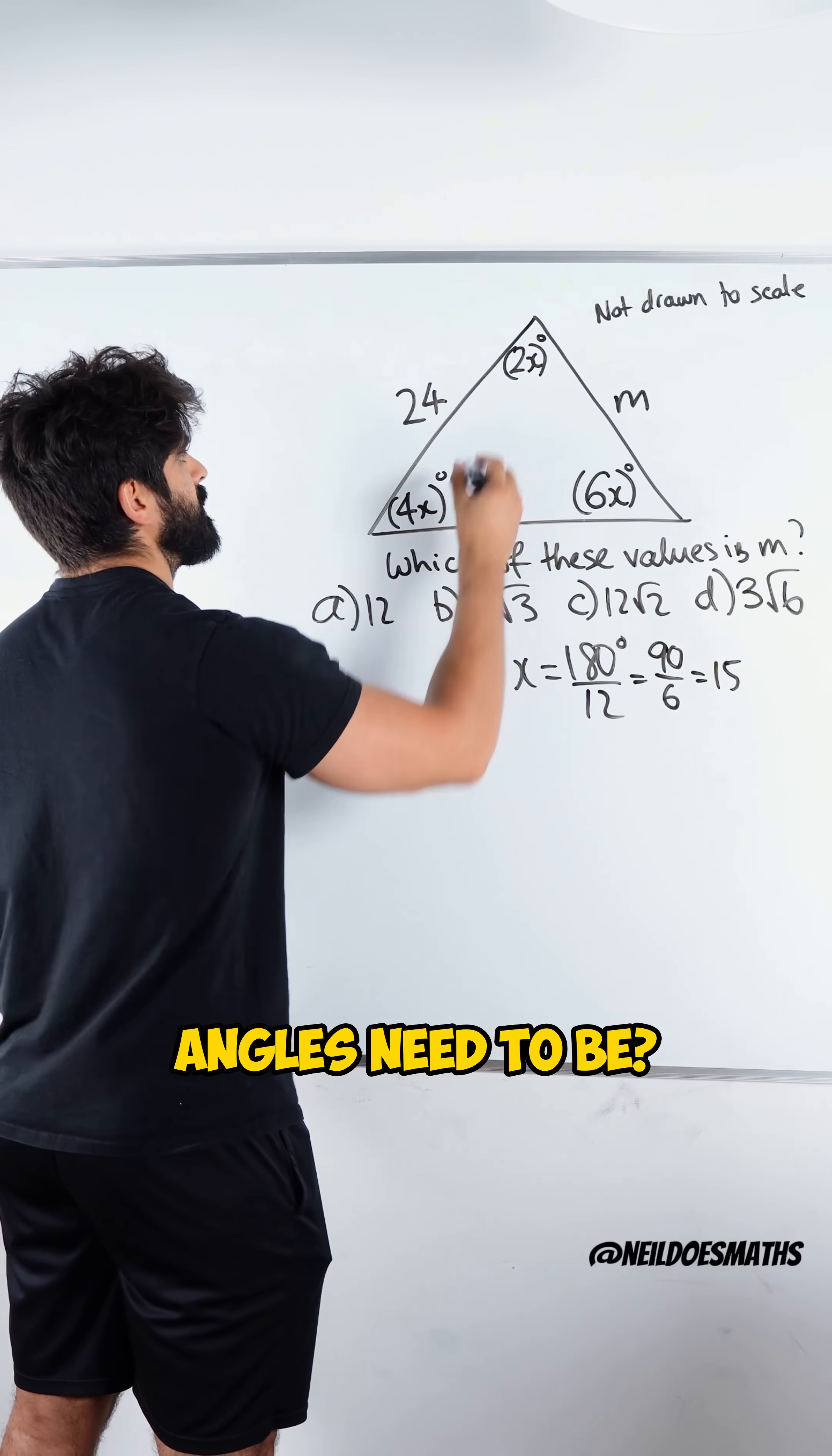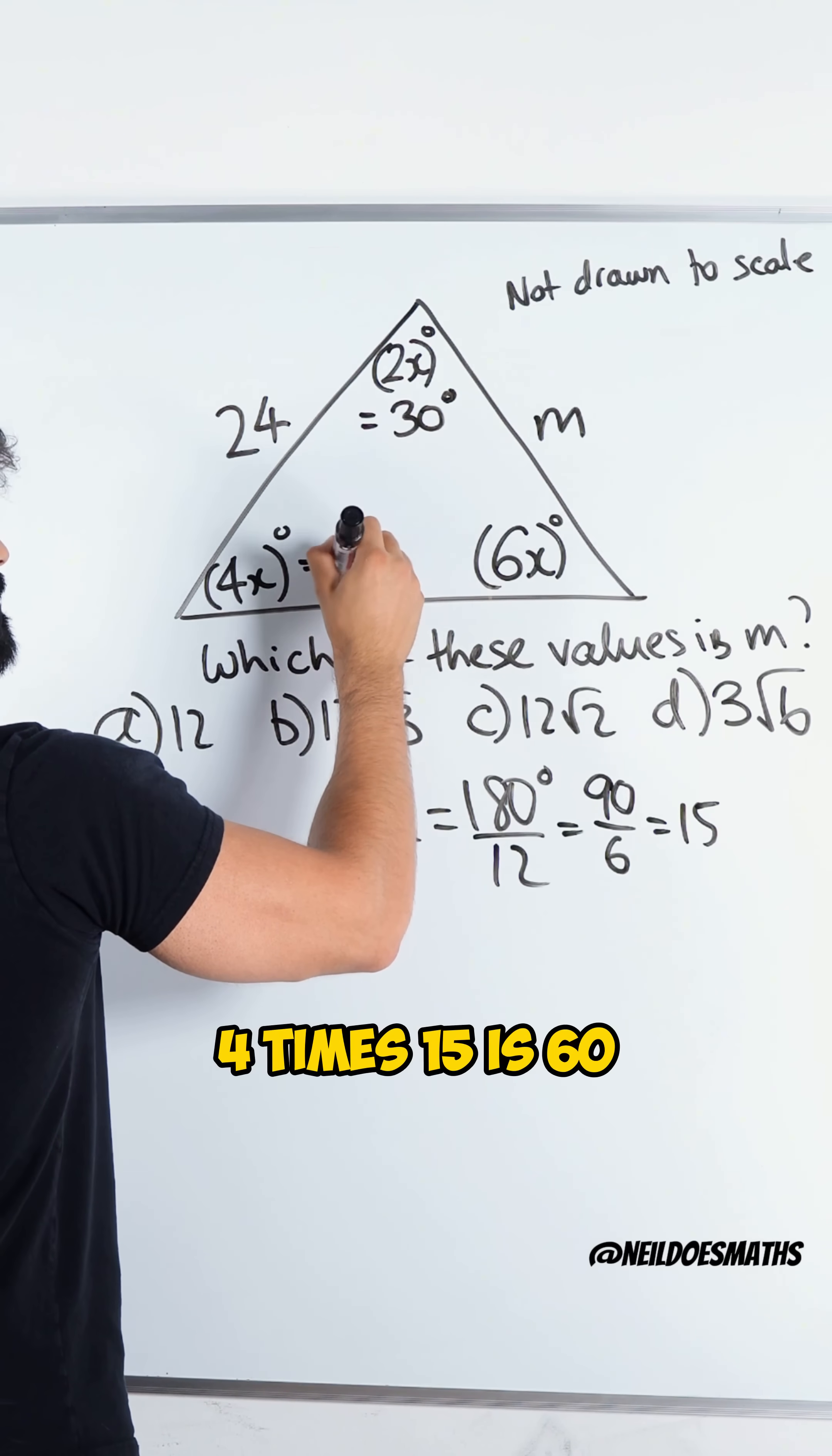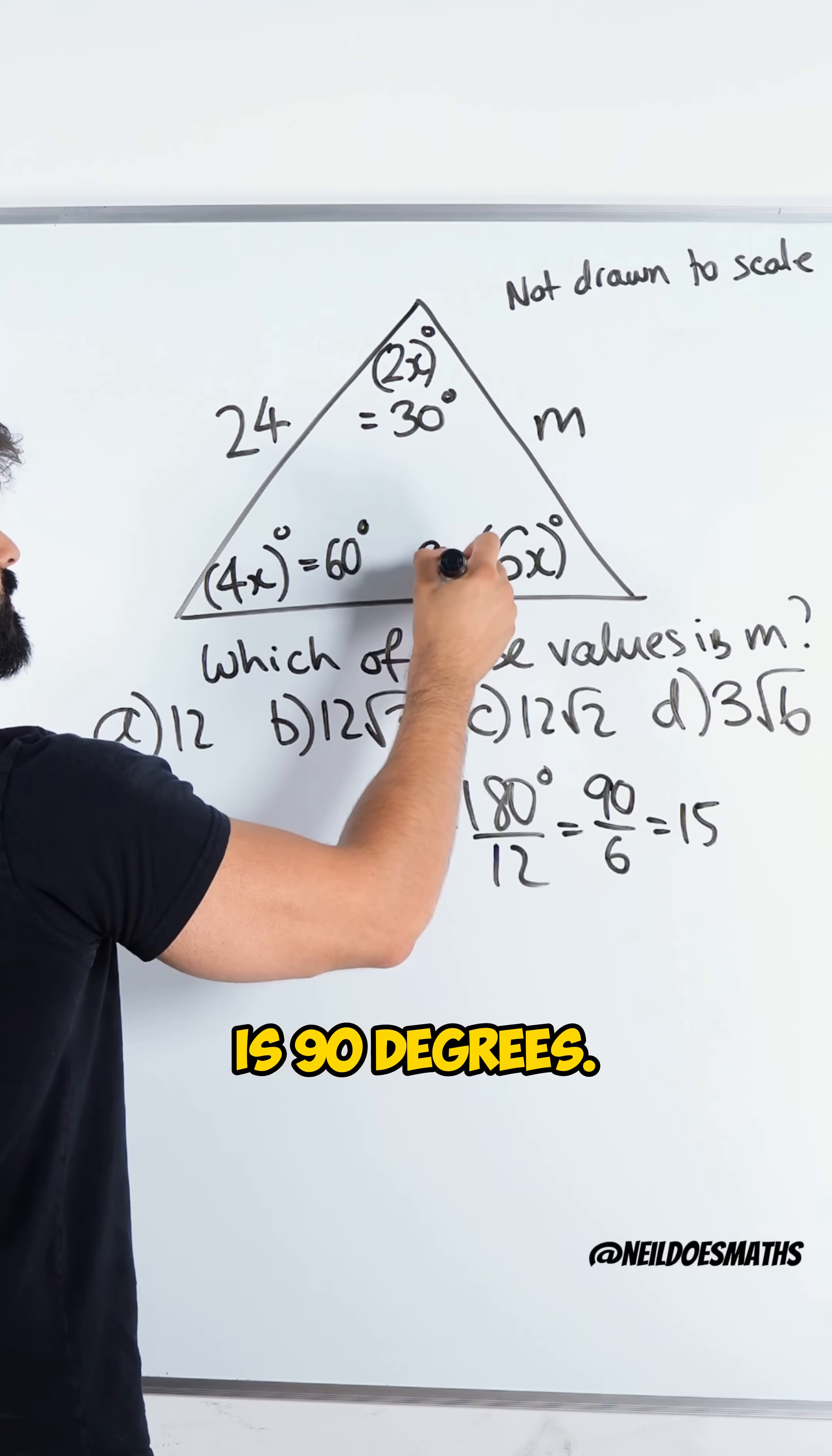So what do these angles need to be? Well 2 times 15 is 30 degrees, 4 times 15 is 60 degrees, and 6 times 15 I already know is 90 degrees.